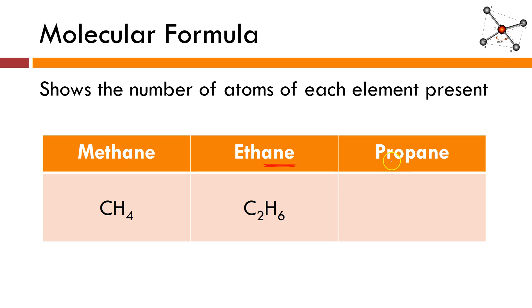Moving on, we've got propane. The prefix prop means three, so I've got single bonds between the three carbon atoms, and putting as many hydrogens around it as possible gives us the formula C3H8. In organic chemistry, molecular formulas aren't super helpful. When we get to larger, more complicated organic molecules, molecular formulas come up short because they don't really tell you anything about how the atoms are bonded together or how the molecule is arranged.